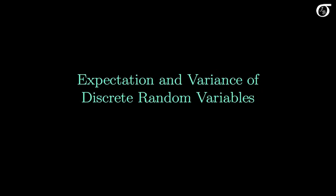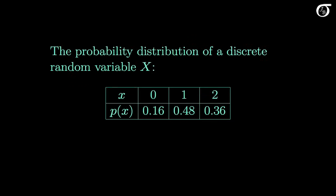Let's investigate the expectation and variance of discrete random variables. Here's an example of a probability distribution of a discrete random variable X. A discrete probability distribution is a listing of all possible values of the random variable X and their probabilities of occurring.